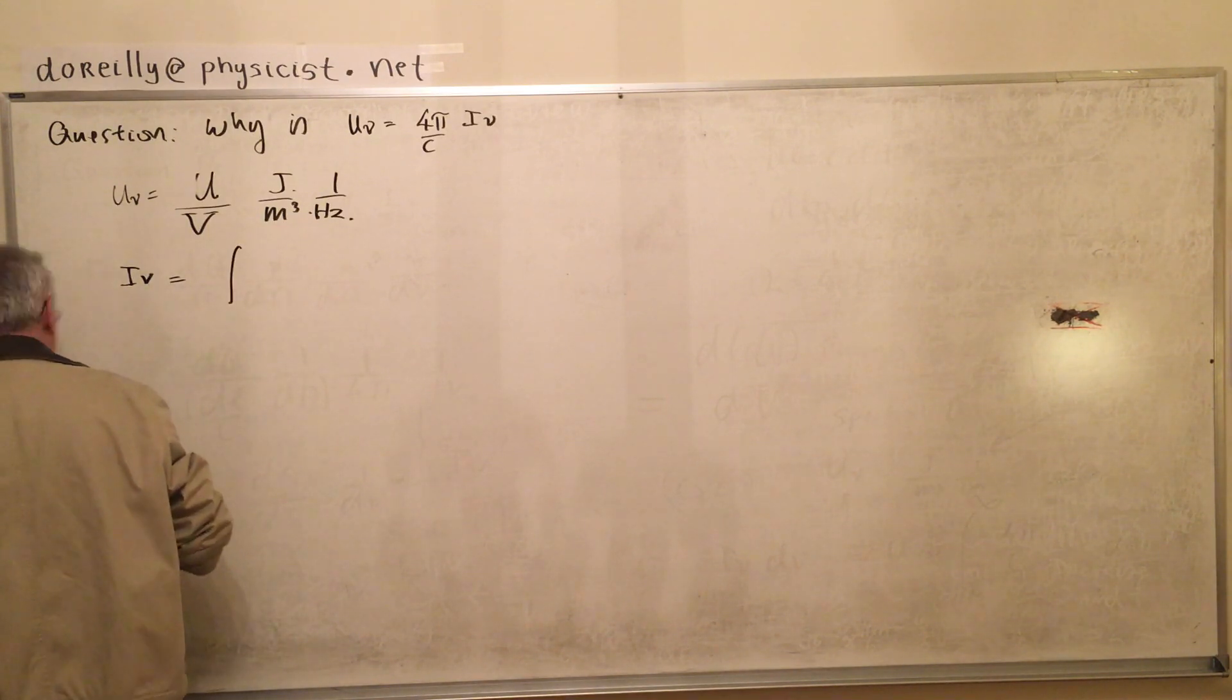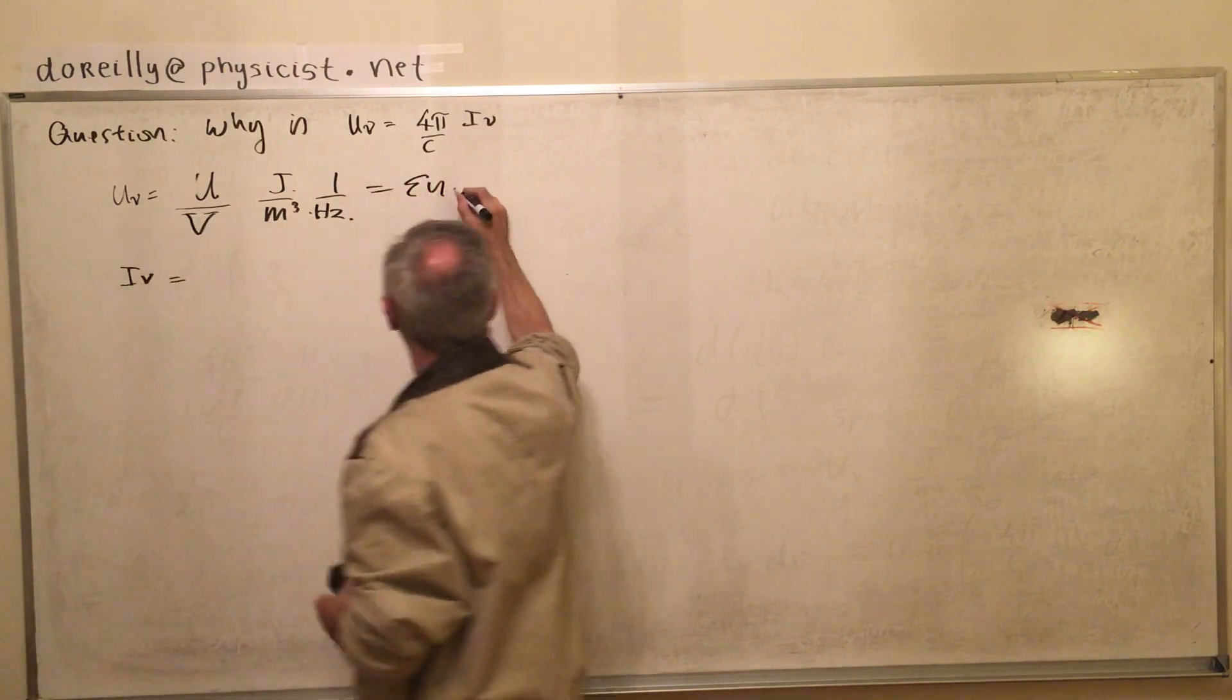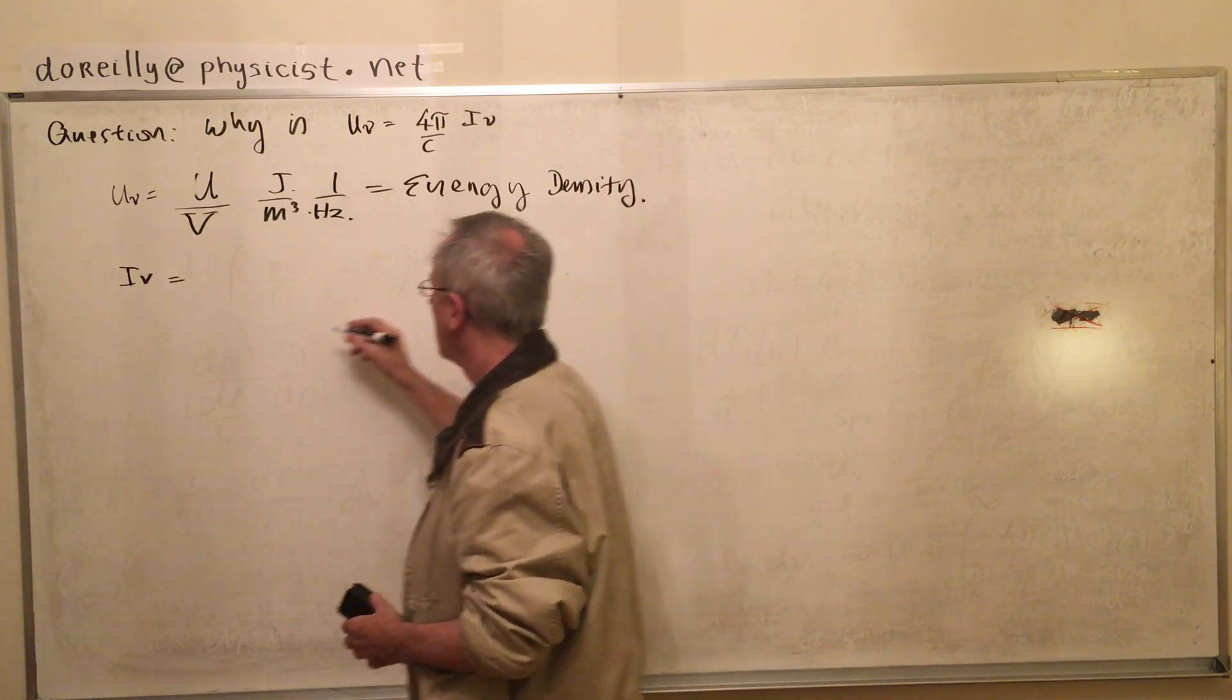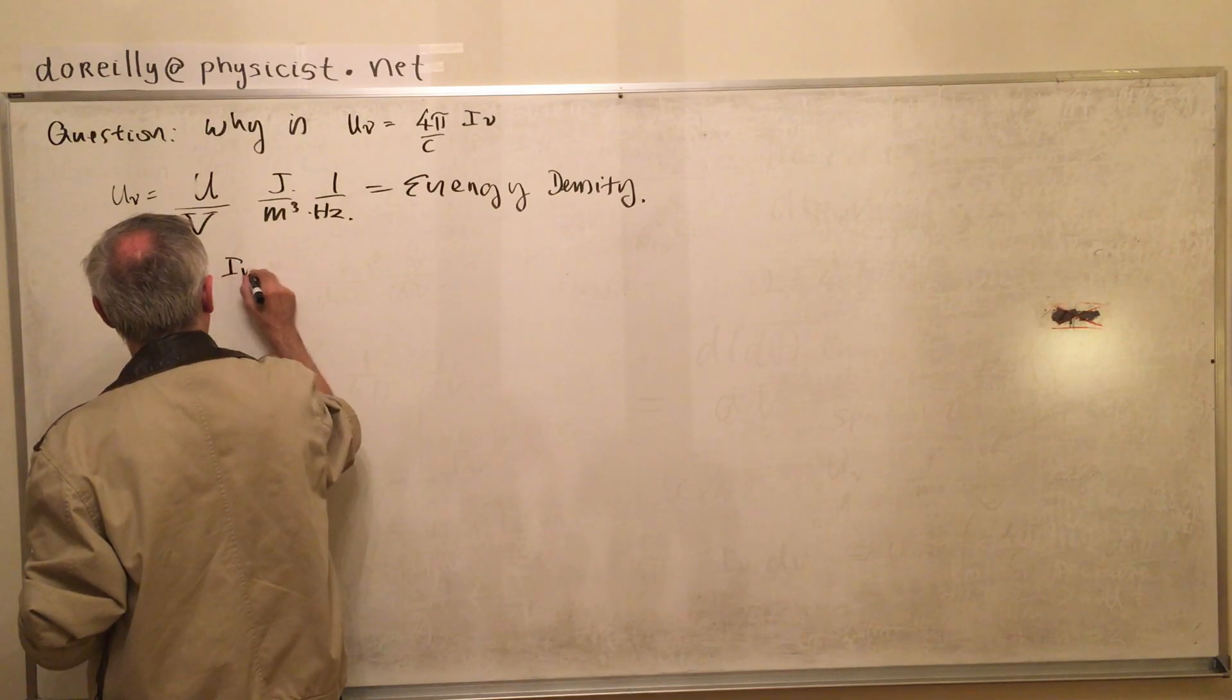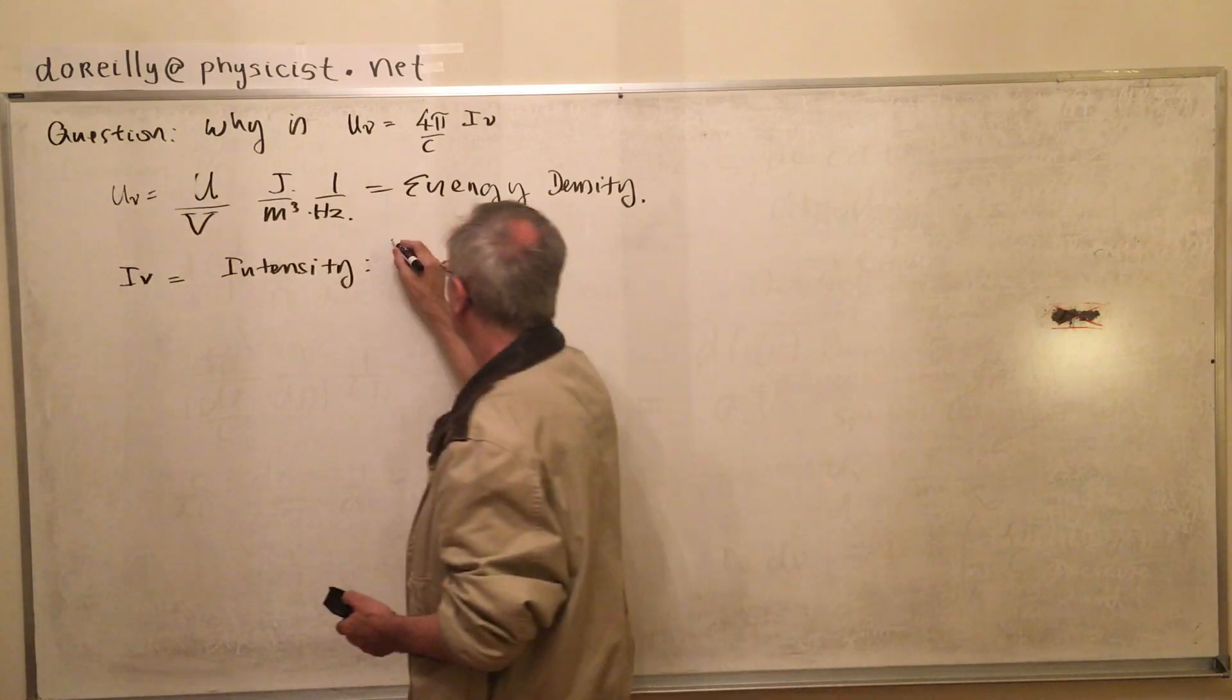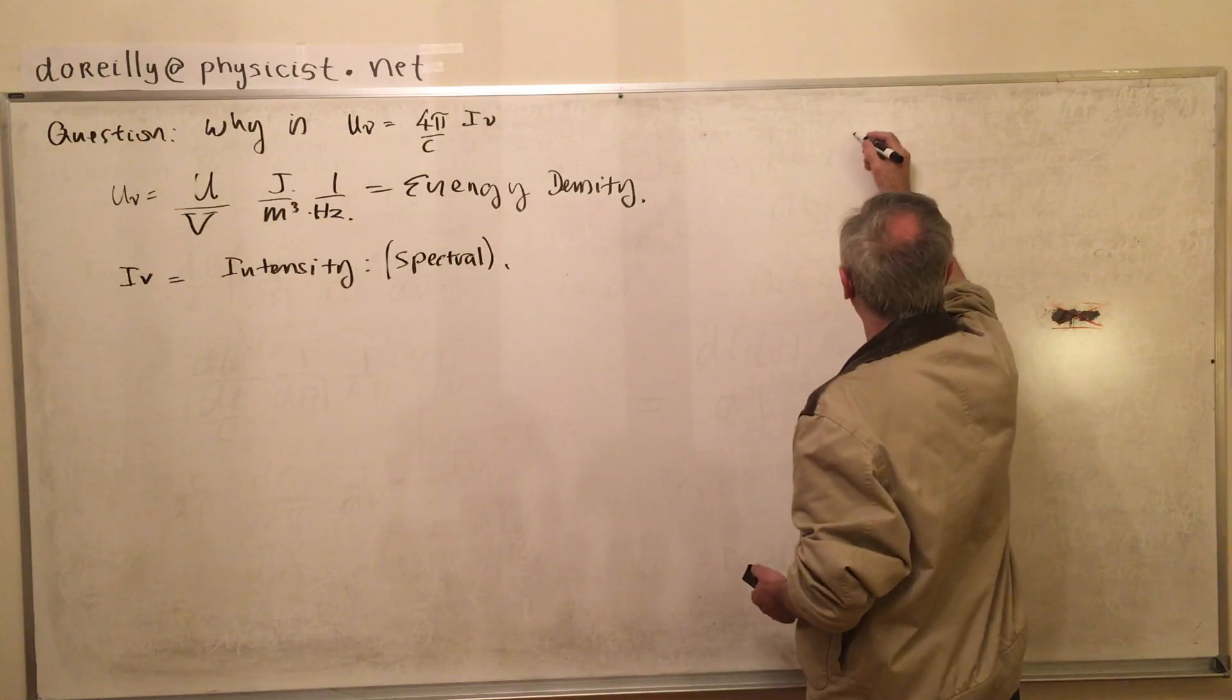Now what is I_nu? Well, I_nu also has a spectral complication. Now I_nu is intensity, but it's spectral. What does that mean? Basically, it has a spectral dependence.